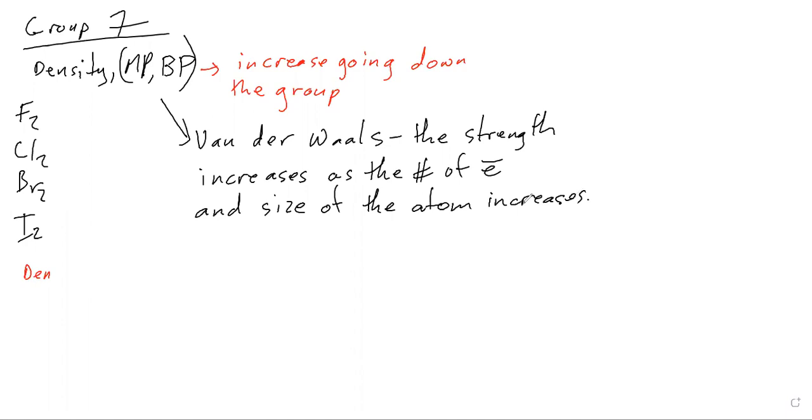Clearly, as you go down the group from fluorine to chlorine to bromine to iodine, the size of the atom is getting larger and the number of electrons are increasing. So the strength of the Van der Waals force increases. Once it gets stronger it will require more energy, hence more energy is needed and a higher melting point is required to break.